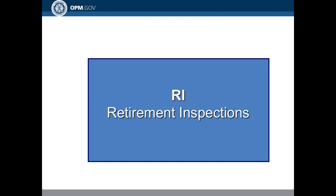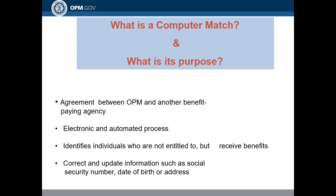Next is the Retirement Inspections Branch. What is a computer match and what is the purpose? It is an agreement between OPM and another benefit-paying agency — an electronic and automatic process. We identify individuals who are not entitled to but receive benefits, and we correct and update information such as social security numbers, date of birth, and address changes.